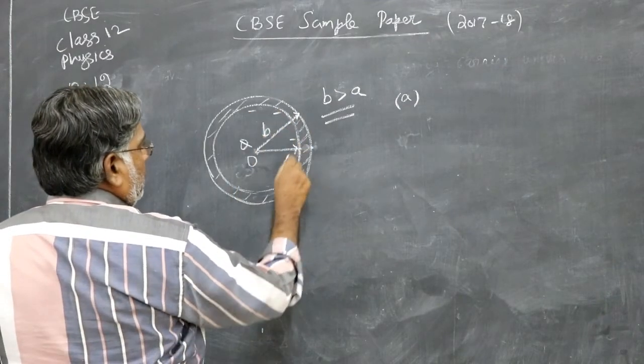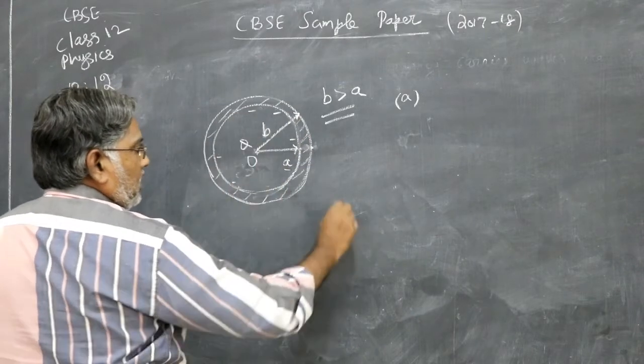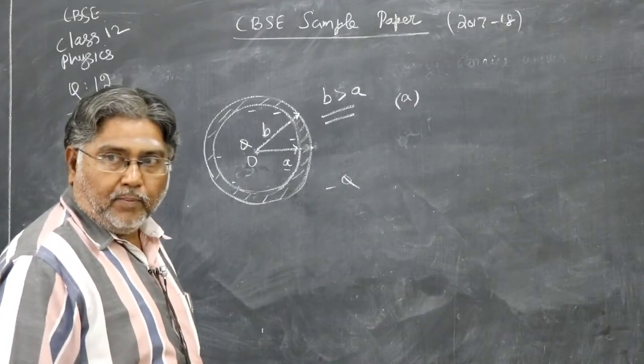Minus Q here uniformly. So charge on the inner spherical shell minus Q. Inner surface of the spherical shell minus Q.